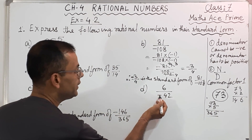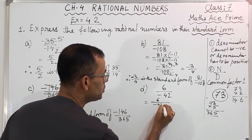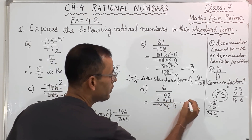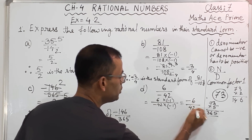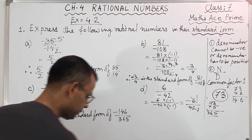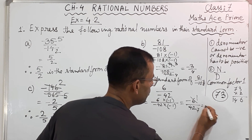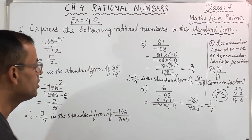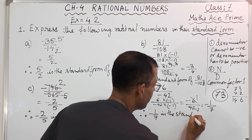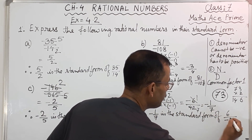Here, the denominator is negative, so I have to change it. So I will write 6 by minus 42. I will multiply numerator and denominator with minus 1. So what will come? Minus 6 by 42. Now I can cancel: 6 ones are 6, 6 sevens are 42. So what you get? Minus 1 by 7. Therefore, minus 1 by 7 is the standard form of 6 by minus 42.